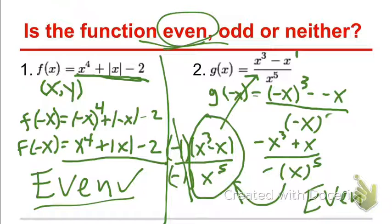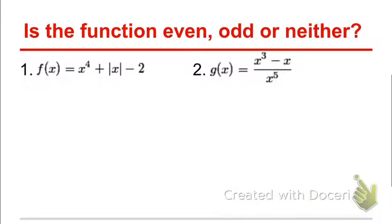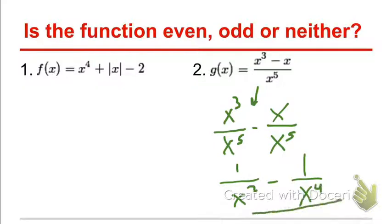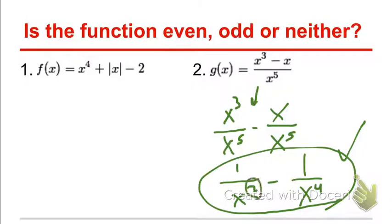To check for even or odd: plug in −x for x, look for even exponents or absolute values which turn −x into +x, and odd exponents which keep the negative sign, then simplify. If you get the same equation as the original, it's an even function. To understand example 2 differently, rewrite the rational function as x³/x⁵ − x/x⁵, which simplifies using exponent rules to 1/x² − 1/x⁴. All the variable exponents are now even, confirming it stays the same when you plug in −x.